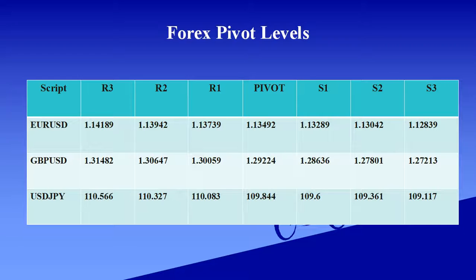USD/JPY pivot level range is 109. Support level range is 109. Resistance level range is 110.08 and 110.56.